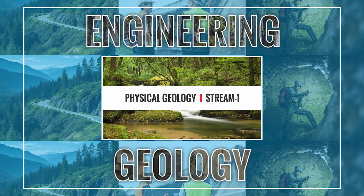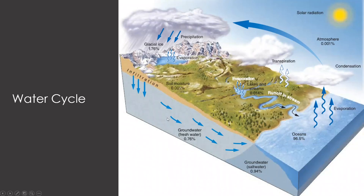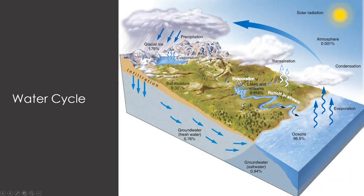Today's lecture, we will be discussing some portions of the geological work of streams. The water cycle is a concept you all must have studied at school level — water from the ocean evaporates, forms clouds, precipitates, and some part is converted into ice forming glaciers. Some part flows as surface runoff reaching the sea, some is absorbed by soil as groundwater, and some is used by plants through transpiration, returning to the atmosphere. This is a complete cyclic process.